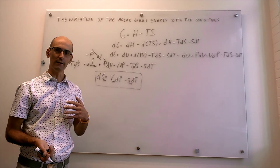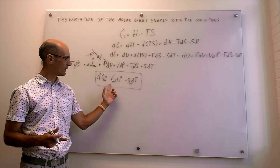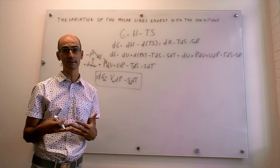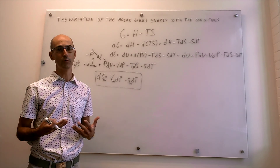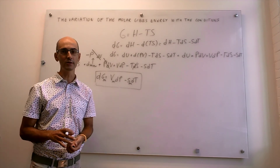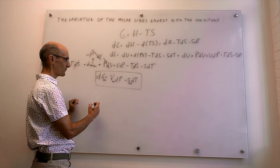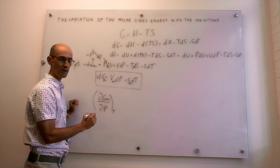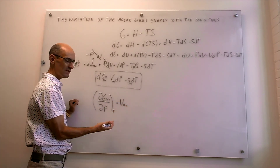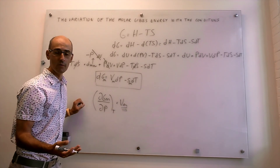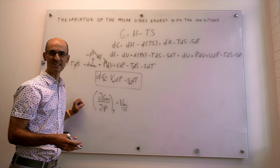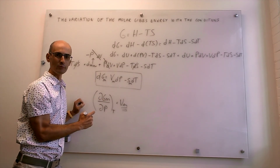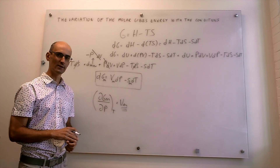We'll study this expression in future videos in parts — first the pressure dependence, then temperature, then both together. To study each dependence individually, we rewrite the expression accordingly. The way the molar Gibbs energy depends on pressure, keeping temperature constant, is just the molar volume of the substance. This is useful because molar volumes are known — for liquid water, the molar volume is about 18 mL per mole — and this tells us how the molar Gibbs energy changes when pressure is applied.